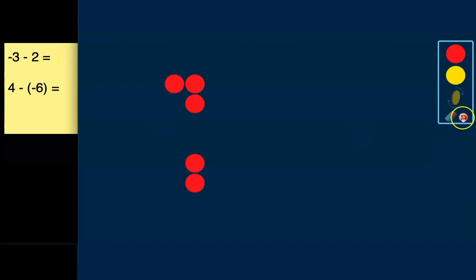Okay, let's use these counters to, let's reset, solve the next problem. The next problem is 4 minus negative 6. So let's start with this first integer. It's a positive 4. So we're going to pull out 4 yellow counters: 1, 2, 3, and 4.